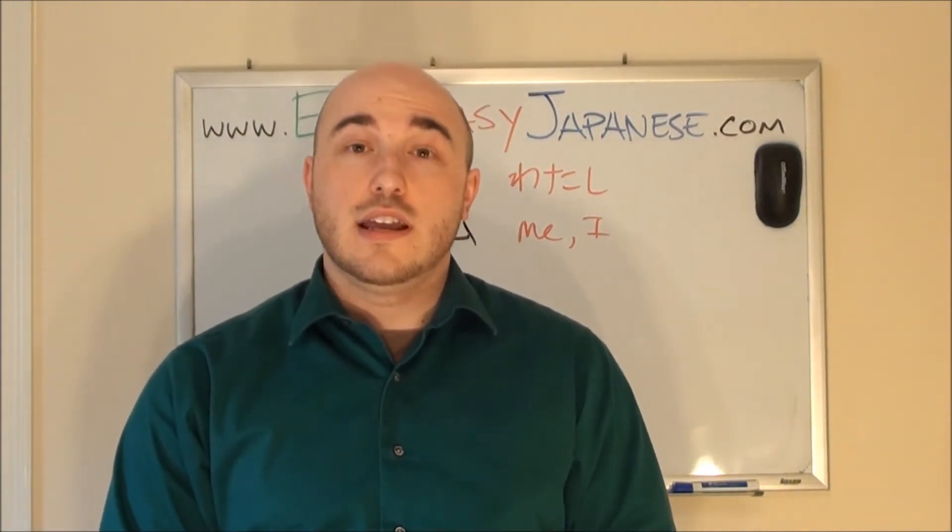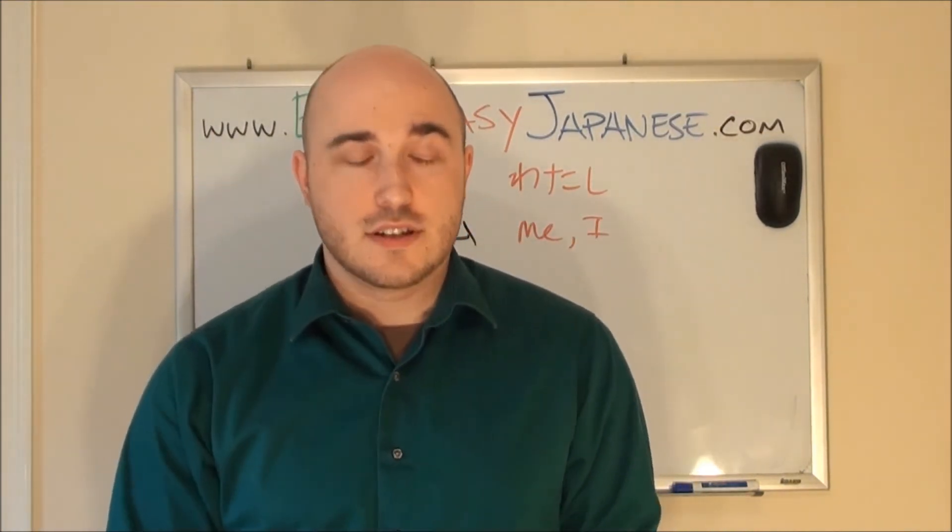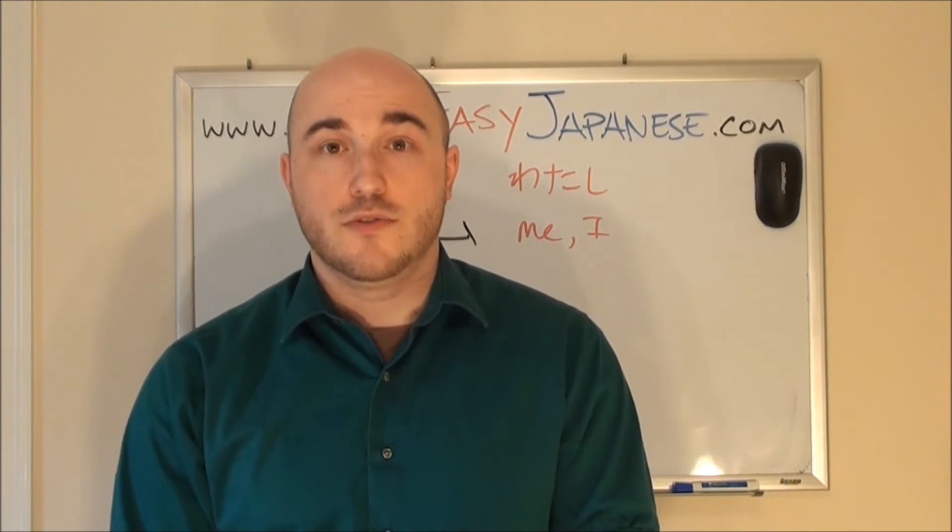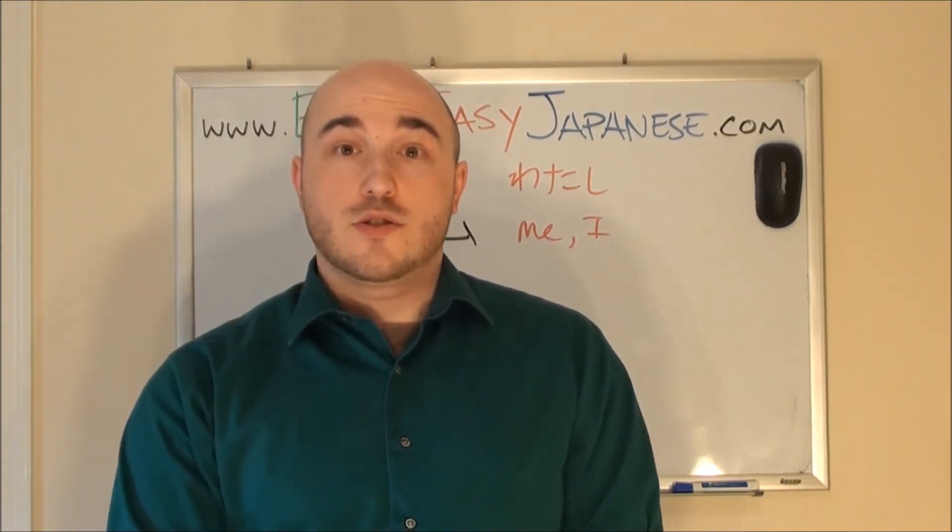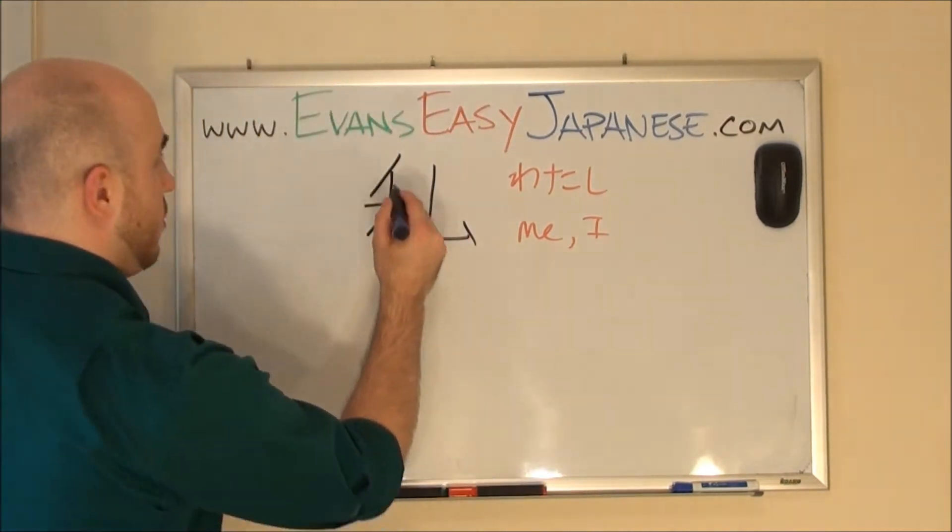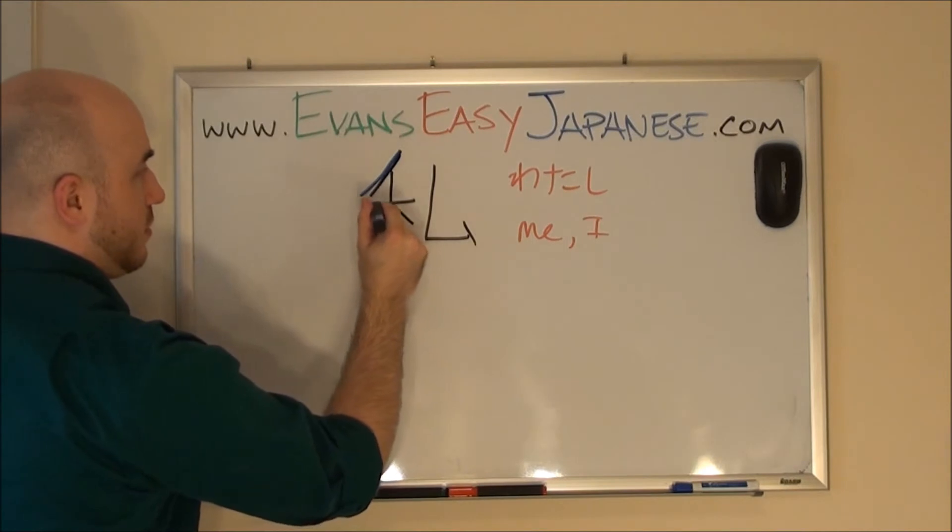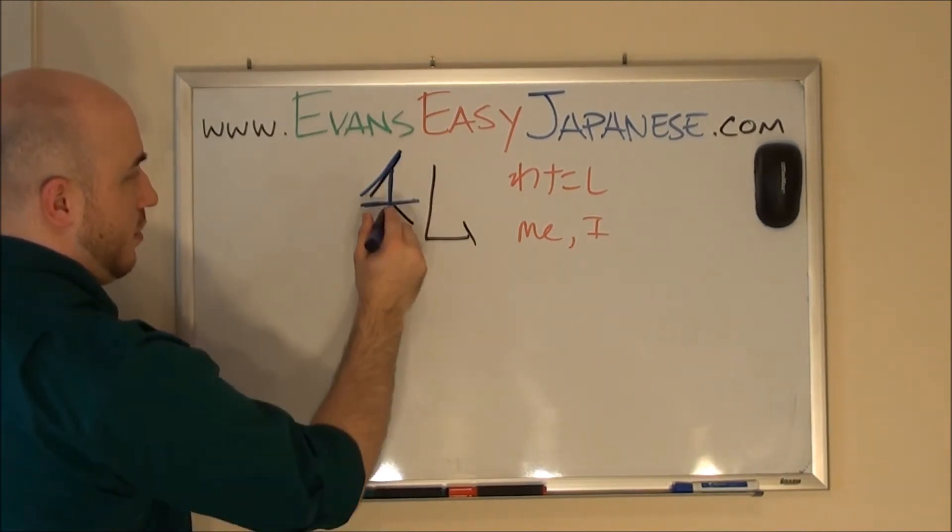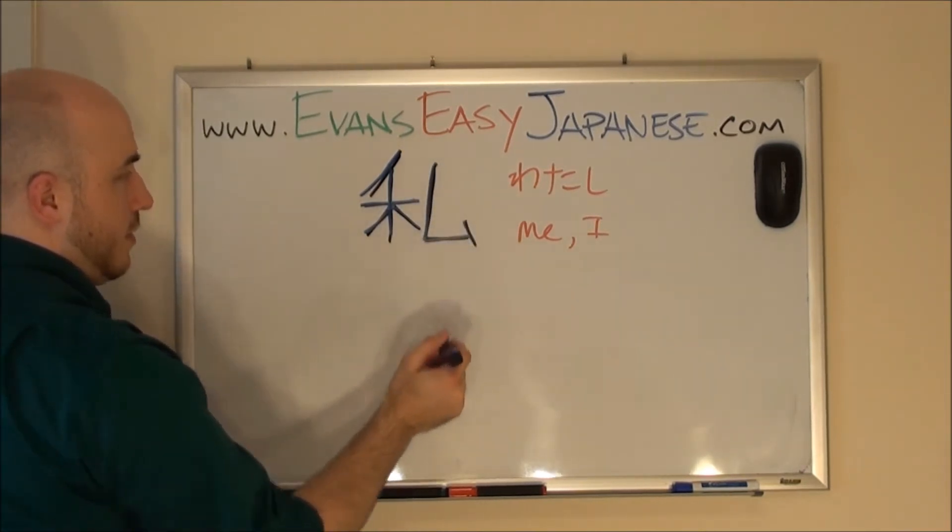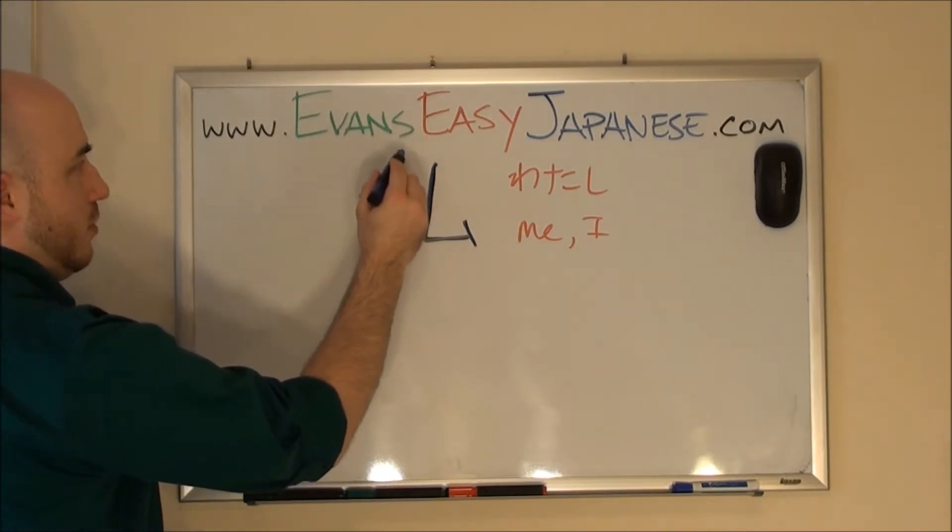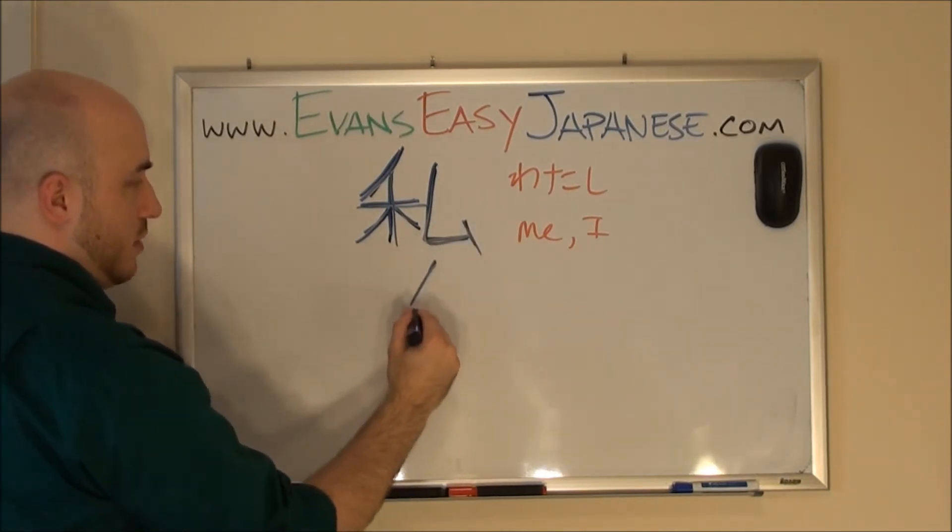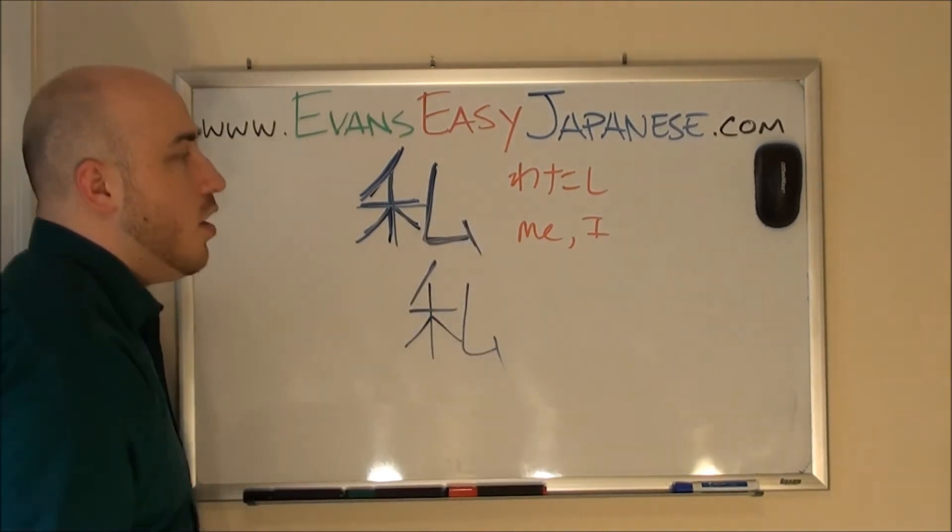Okay, the next kanji that we're going to learn is watashi. This is the word for me or I. It's pronounced watashi. There are other pronunciations, but so far we've only learned watashi. Here we go, stroke order. This is going to help you know how to write kanji. One, two, three, four, five, six, seven. One more time. One, two, three, four, five, six, seven. One, two, three, four, five, six, seven. Watashi.